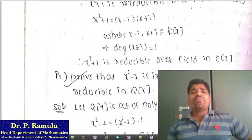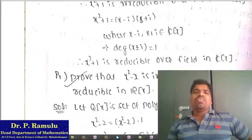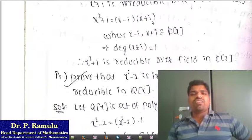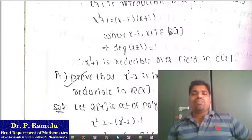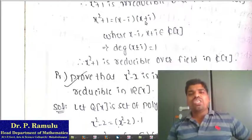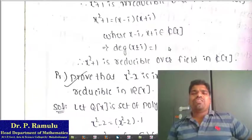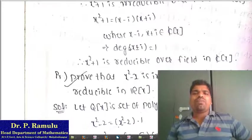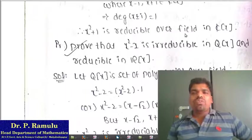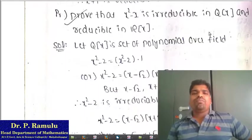If I take x² + 1 over the field C[x], then x² + 1 = (x − i)(x + i). Here x − i belongs to C[x] and x + i belongs to C[x]. That means this polynomial is written as a product of non-constant polynomials in C[x]. Therefore x² + 1 is reducible over the field C[x].